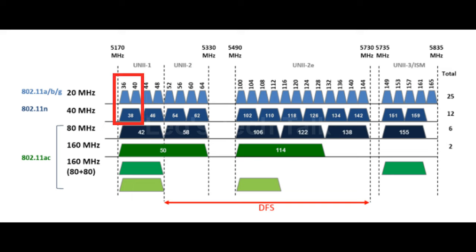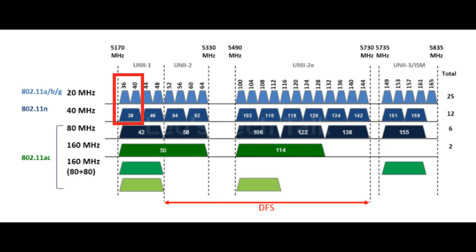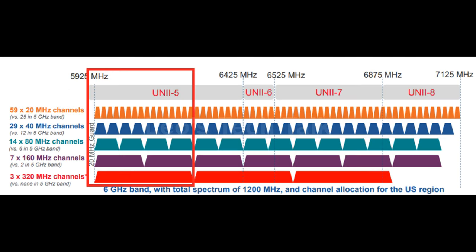What is channel bonding? Channel bonding was first introduced in 802.11n to allow 40 MHz channels, followed by 802.11ac to allow 80 MHz and 160 MHz channels, and followed by 802.11be to allow 320 MHz channels to achieve higher data rates. Channel bonding was initially used in 802.11n by bonding two 20 MHz channels to create a single 40 MHz channel, and is now extended up to 320 MHz. While channel bonding can provide higher data rates, it will also result in fewer available channels.